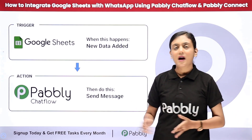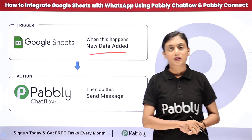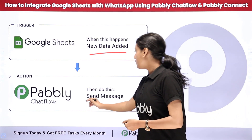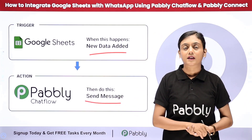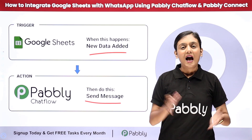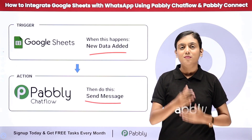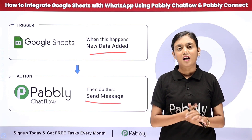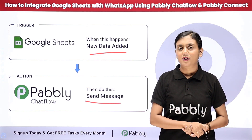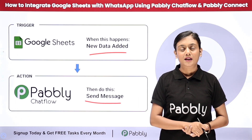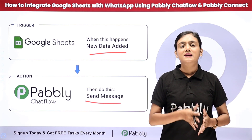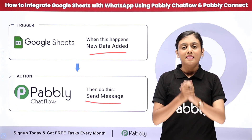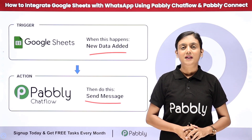Whenever I add the data of a new customer in my Google Sheets, automatically that customer is going to receive a welcome message on their WhatsApp. I am managing my conversations with customers on WhatsApp with the help of Pabbly Chartflow, which is a newly launched product by Pabbly. If you want to learn how to create this amazing automation using Pabbly Connect, let me take you to my screen.